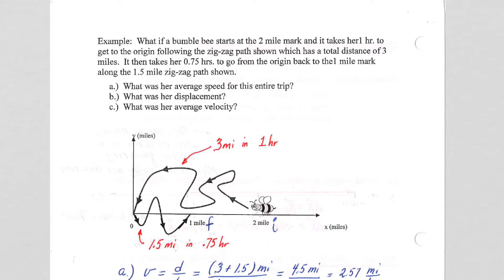So let's do that. If the bumblebee starts at the two-mile mark and it takes her one hour to get to the origin, let's start marking this up. She starts down here, so look down here at the bumblebee. At the two-mile mark, we're told it takes her one hour to get to the origin, following a zigzaggy path.